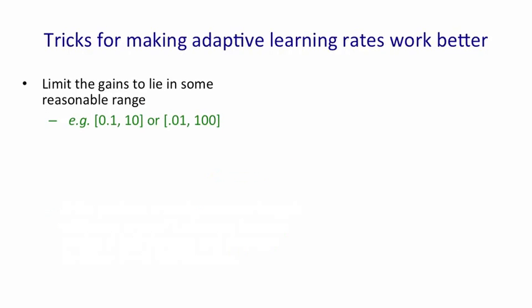There's a number of tricks for making adaptive learning rates work better. It's important to limit the size of the gains. A reasonable range is 0.1 to 10 or 0.01 to 100. You don't want the gains to get huge, because then you can easily get into an instability and destroy all the weights.